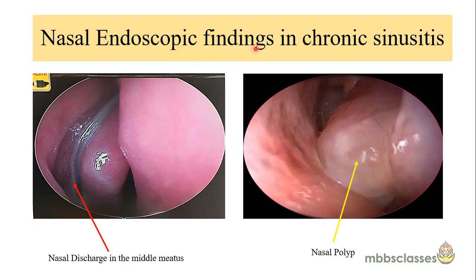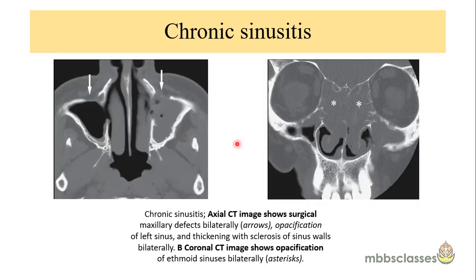On endoscopy, one picture shows discharge in the middle meatus — a feature of chronic rhinosinusitis without polyp. Another picture shows a nasal polyp in CRS with polyposis. On the basis of nasal endoscopy, chronic rhinosinusitis is divided into with polyp and without polyp. Radiologically, features of chronic sinusitis include opacification of the sinuses, mucosal thickening, thickening and sclerosis of the sinus wall, and possible bone remodeling. Total opacification of the ethmoid sinuses may be seen.